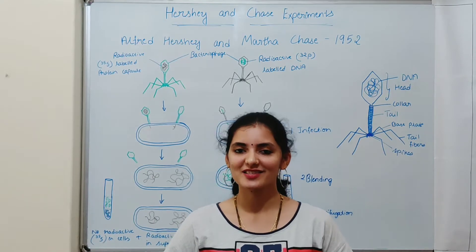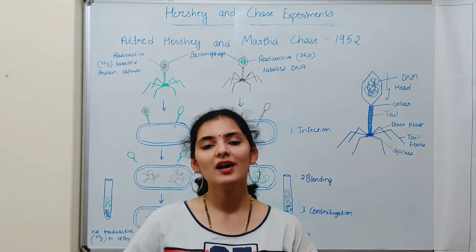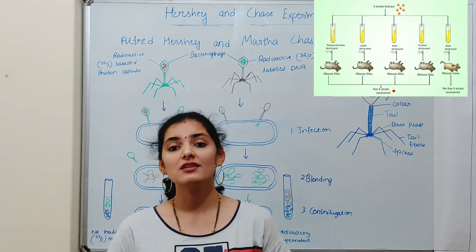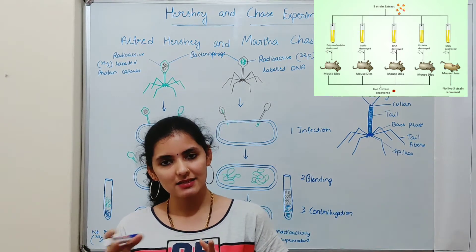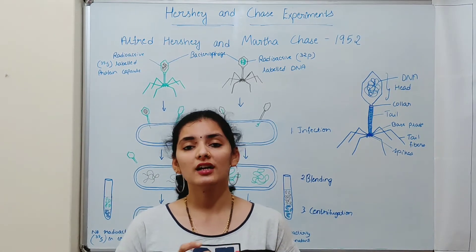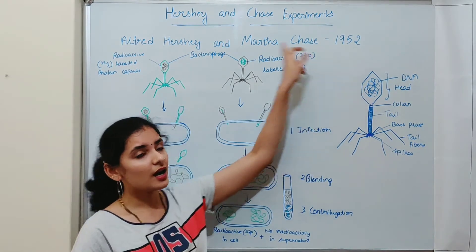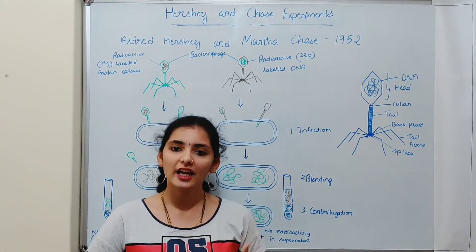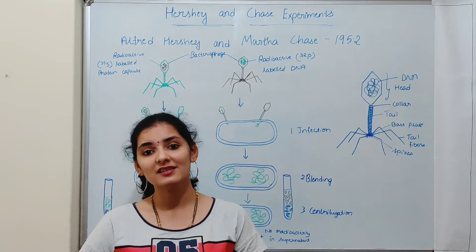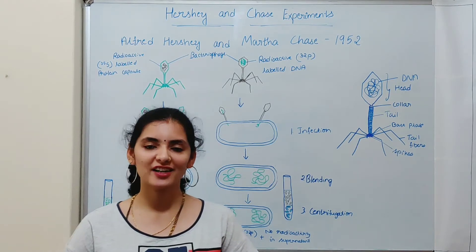Hello friends. In this series of videos I was discussing about the experiment which proved that DNA is a genetic material. In the last two videos I discussed about the Griffith experiment and Avery's experiment. Avery and his colleagues, based on the result of Griffith experiment, conducted a series of experiments and concluded that DNA is a genetic material. But many biologists were not convinced by the evidence of Avery's experiment. So later, during 1952, Hershey and Chase proved and convinced biologists that DNA is a genetic material. That experiment is popularly known as the Hershey and Chase experiment, and in this video I am going to talk about it.